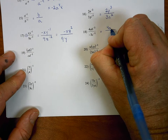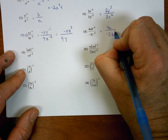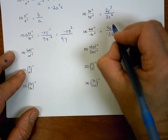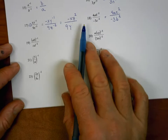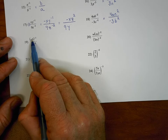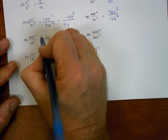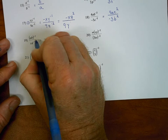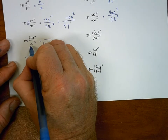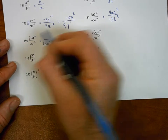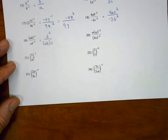Number 18: to simplify, I keep the 4 and the a where they are, I keep the negative 3 where it is, the b to the negative two moves down to the denominator becoming a positive two power, and the c to the negative two power also moves. Number 19: because a and b are in parentheses, that entire expression is associated with the negative one power. So when I simplify, I move the entire expression ab to the denominator, and the negative one power becomes positive one. In the denominator part, c is not associated with the negative two power, so c stays, but d moves up to the numerator and the negative two power becomes positive two.